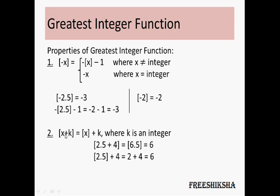The greatest integer of (x plus k), when k is an integer, equals the greatest integer of x plus k. If k is not an integer, there is no specific formula — there are two possible cases: it could be the greatest integer of x plus the greatest integer of k plus 1, or it could be the greatest integer of x plus the greatest integer of k. It depends on whether the fractional part of the sum is greater than 1 or not.